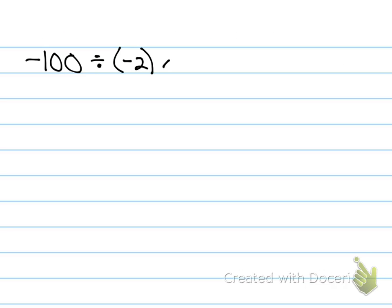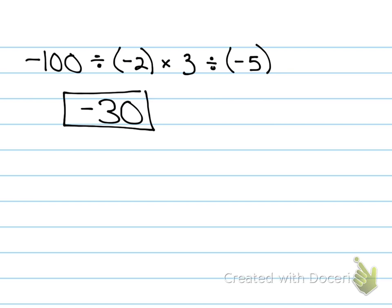On your quiz on Monday there are a few problems where you are multiplying and dividing more than two numbers. We solve left to right, then go back and count how many negatives there are — that tells us the sign of our answer. The number part is 30 when simplified, but how many negatives do we have here? Three. Three negatives, so it is negative 30.